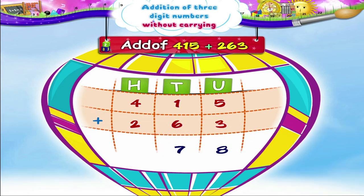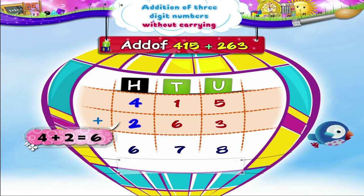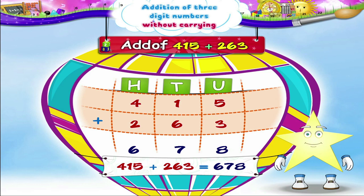Finally, we add the hundreds place digits. 4 hundreds plus 2 hundreds is equal to 6 hundreds. So, 415 plus 263 equals 678. Starry, even if the numbers are big, they can be added easily if they are arranged in proper columns.